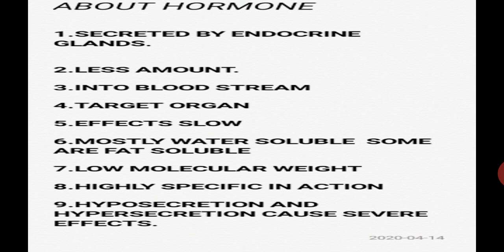Property seven — hormones have a low molecular weight. Property eight — hormones are highly specific in action. Property nine — hyposecretion means hormones are secreted in very small amounts, and hypersecretion means hormones are secreted in very large amounts. Both hyposecretion and hypersecretion of hormones cause severe effects on the body. These are the properties of hormones. Today we have covered the names of endocrine glands, the definition of hormones, and the properties of hormones. Thank you.